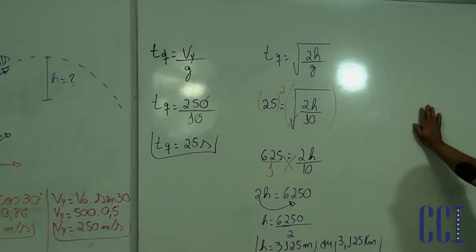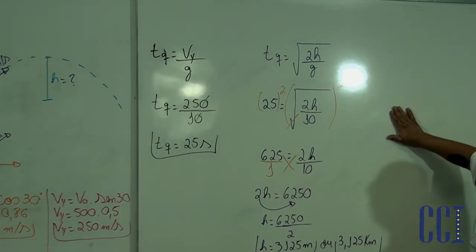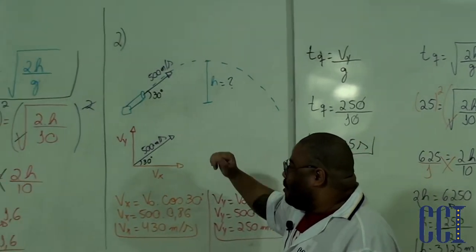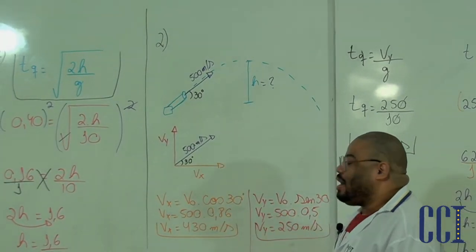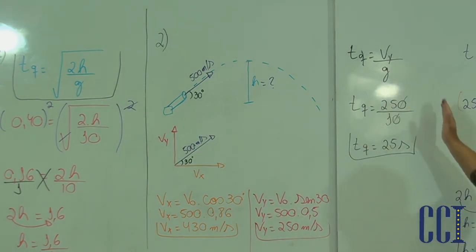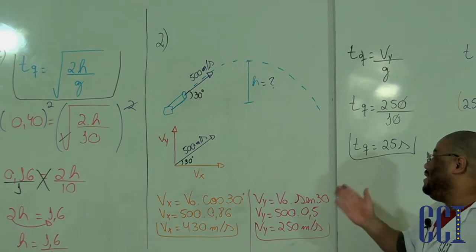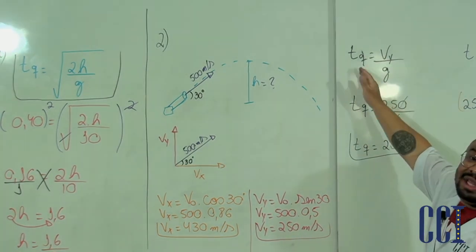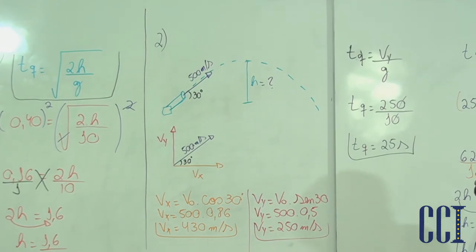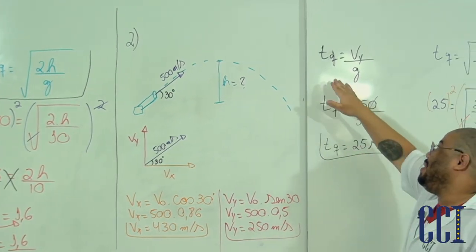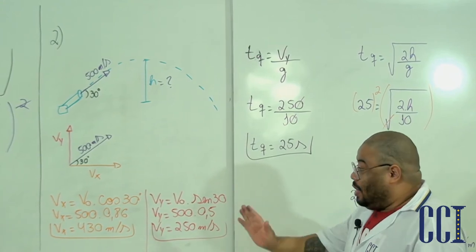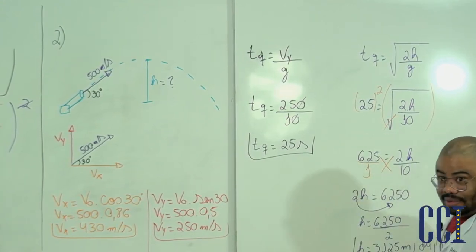Vocês entenderam essa ideia? Recapitulando: primeira coisa — se tiver ângulo, calcule o Vx e o Vy. Depois você vai descobrir a resposta da pergunta dele, que pode ser o tempo de queda ou, nesse caso, a altura. Para saber a altura, a primeira coisa que devemos calcular é o tempo de queda.